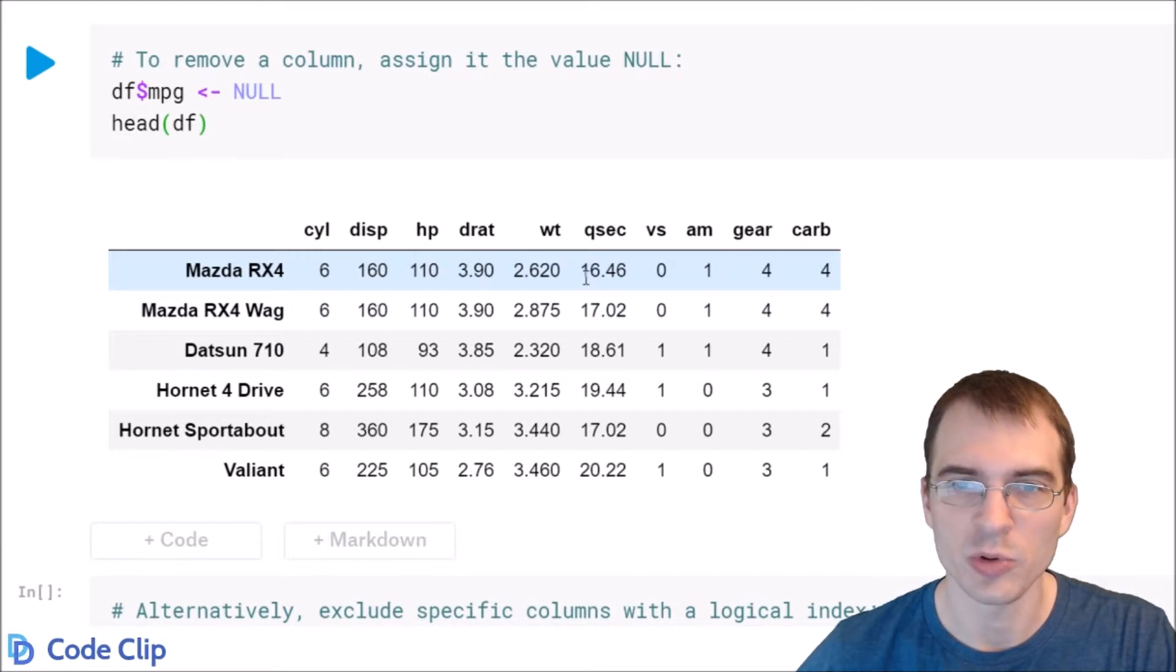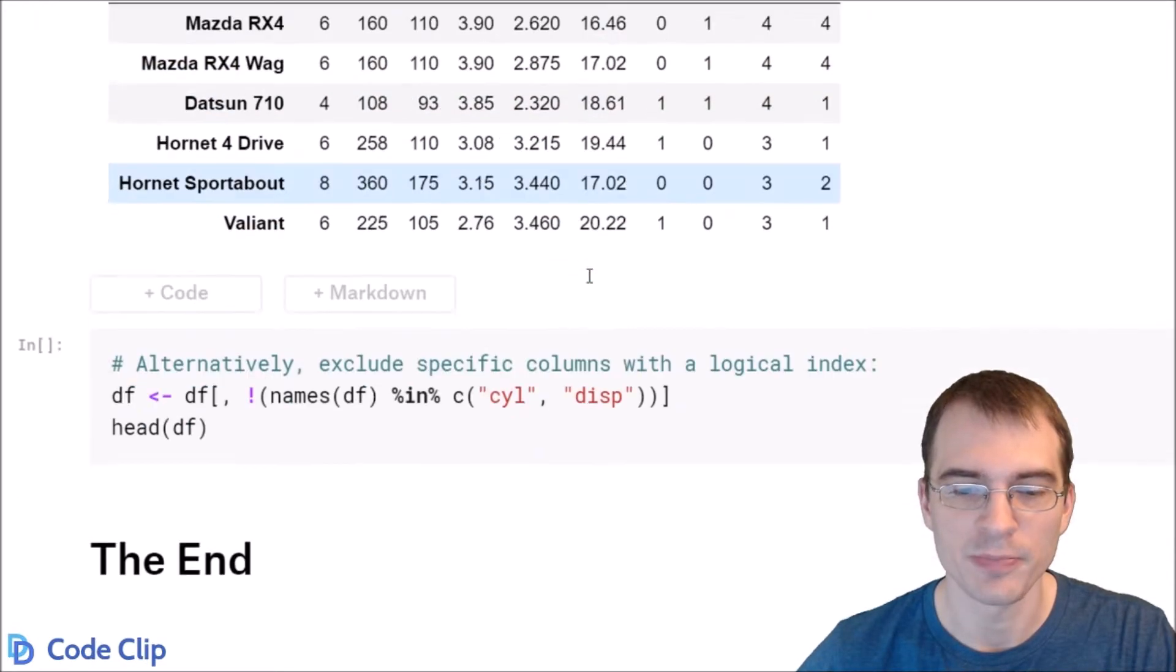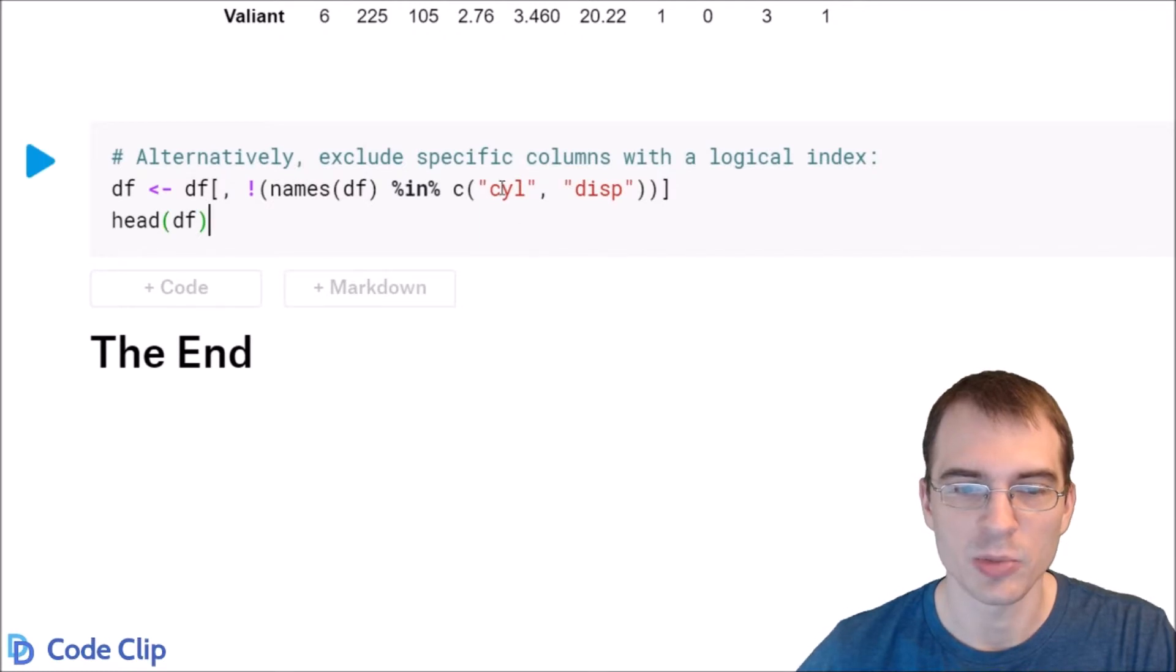I will show one way of removing more than one column at a time. Down here we're going to be removing the cyl and disp columns, and to do that we're making a logical index that will select everything other than those two columns. That's what this statement does.